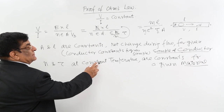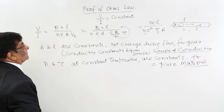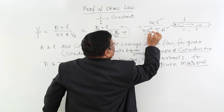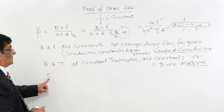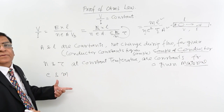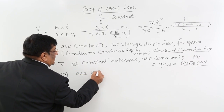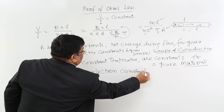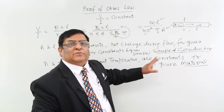N and tau are constants for a given material. Then we have E and M: E is the charge on an electron and M is the mass of an electron. These themselves are constants — they are electron constants — and they will not change whatever material we take or whatever sample we take.